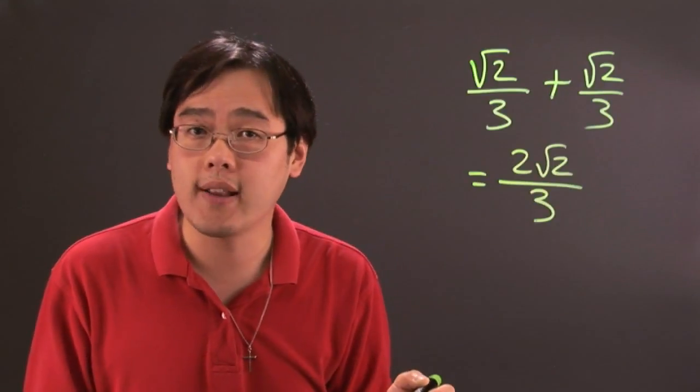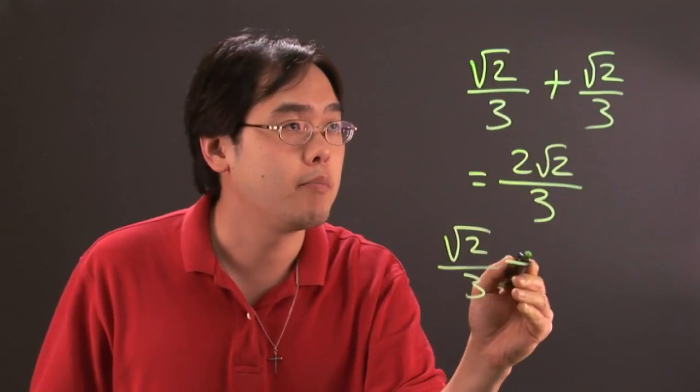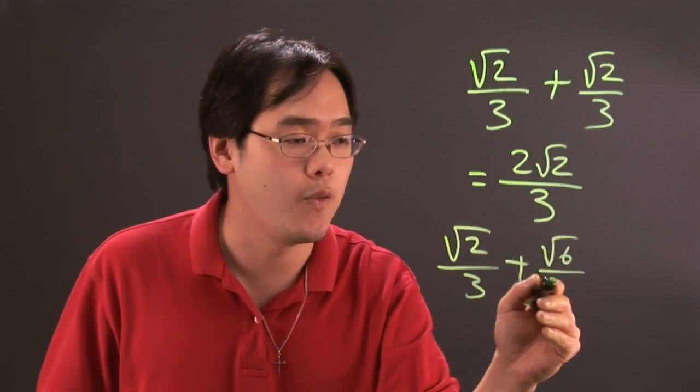Is it always going to work out like that? Not necessarily. Suppose, for example, you have square root of 2 over 3 plus square root of 6 over 3.